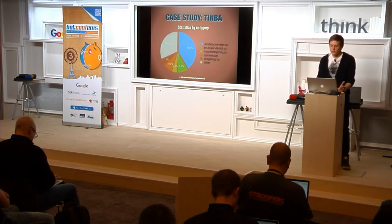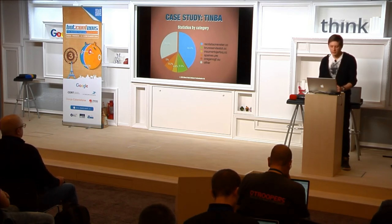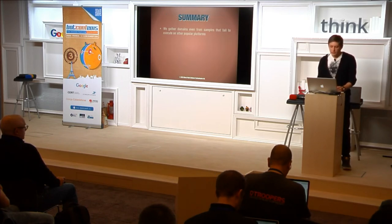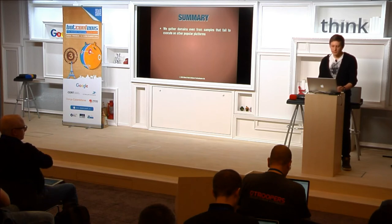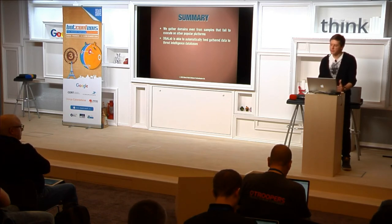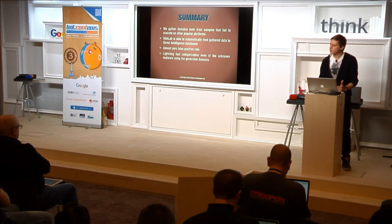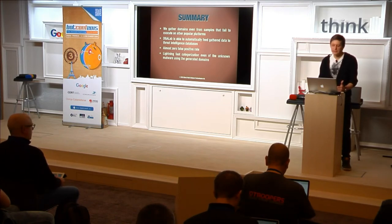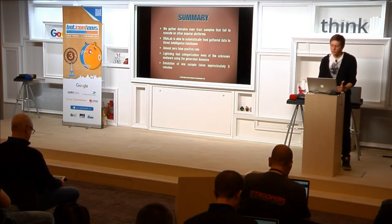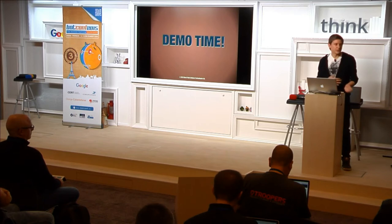Here are the statistics by category for TINBA. We can see the most prevalent categories, which is very useful for intelligence teams — they can see which category is currently prevalent. To summarize: we gather domains even from samples that failed to execute on other popular platforms due to our fixes. DGA Lab automatically feeds data to threat intelligence databases with an almost zero false positive rate, and features lightning-fast categorization even for unknown malware using the generated domains. Emulation of one sample takes approximately three minutes.